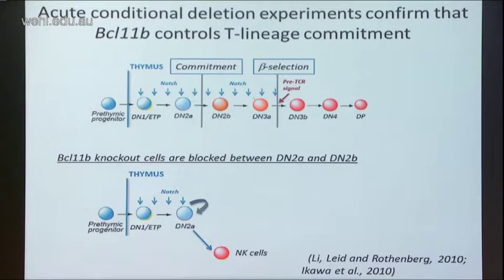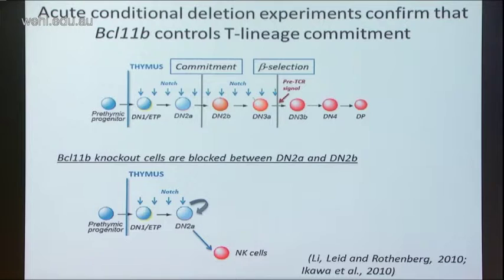In work published a couple of years ago, we did a conditional knockout to show that if you remove BCL11B, the cells never become committed. In fact, they go into a sort of an infinite do-loop in this DN2A early stage, where they continue to proliferate, continue to express stem and progenitor genes, and continue to have access to alternative lineages — they just can't go forward. So the BCL11B function is actually important to get the cells through commitment and through the T cell identity achievement program.